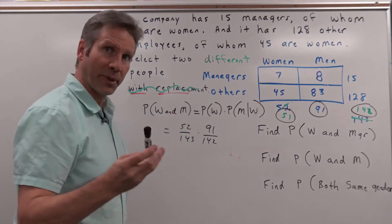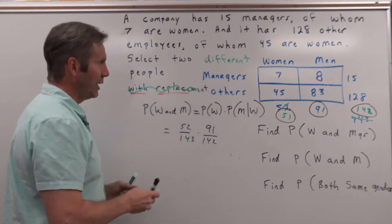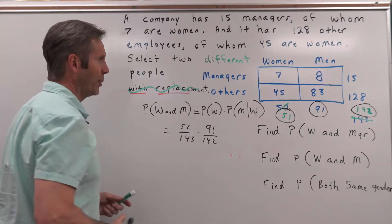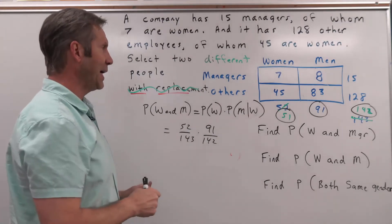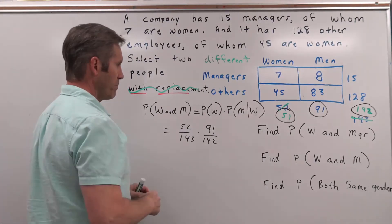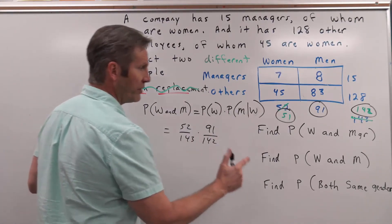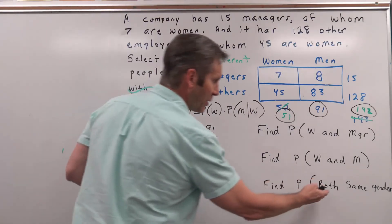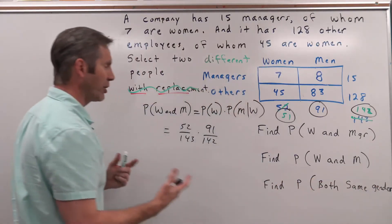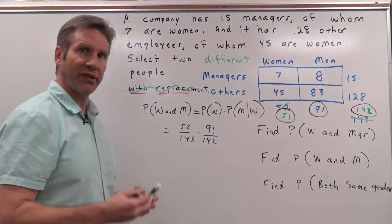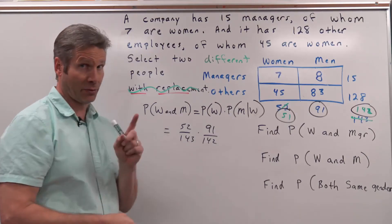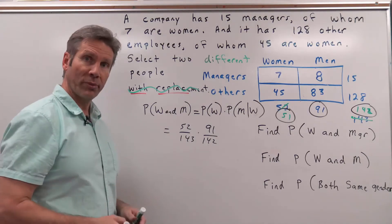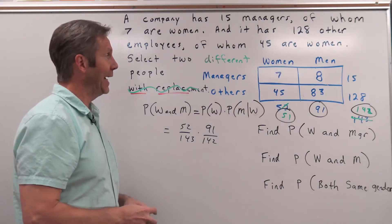Understand the multiplication rule: this notation means 'given' — it is a conditional probability. When we see something like 'the probability that both are the same gender,' we can rephrase it: 'and' means multiply because we're selecting more than one thing, and 'or' always means to add.